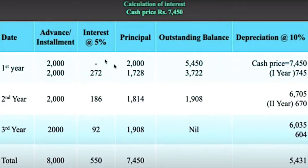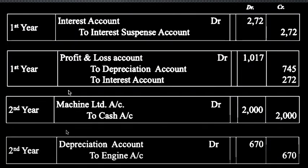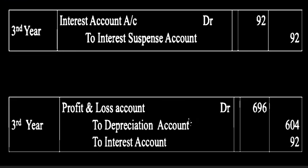We had the calculation of interest for the first year, second year, and third year, along with the installment amounts. We had created journal entries for all this information — first year entries and second year entries. You can watch my previous video on the same problem to get a clear understanding of how we created all these journal entries. We ended at the third year.